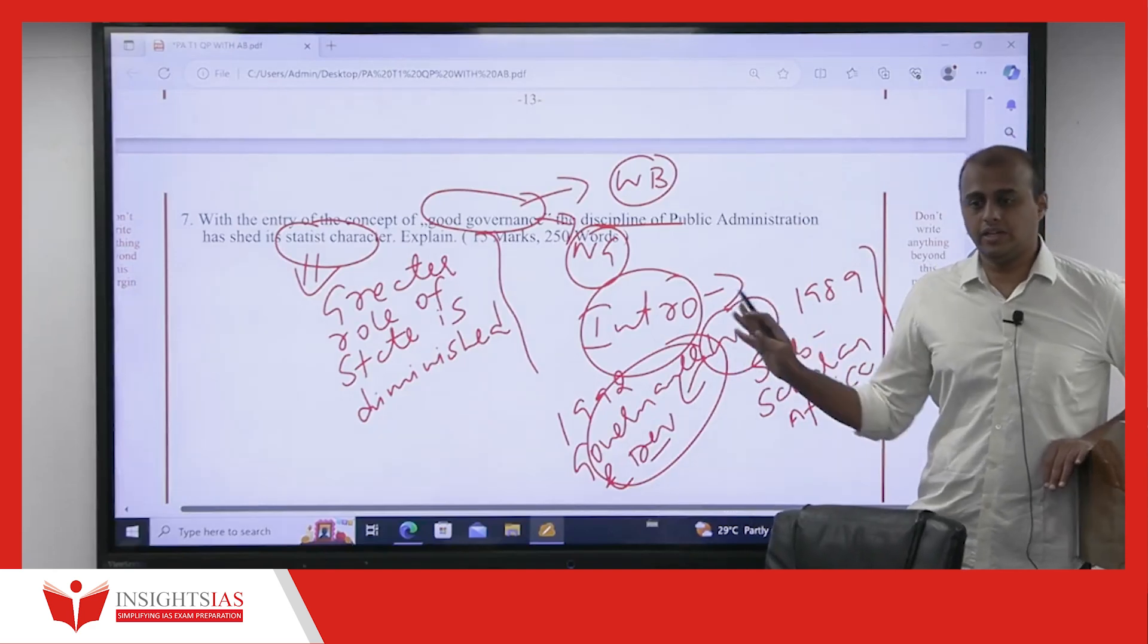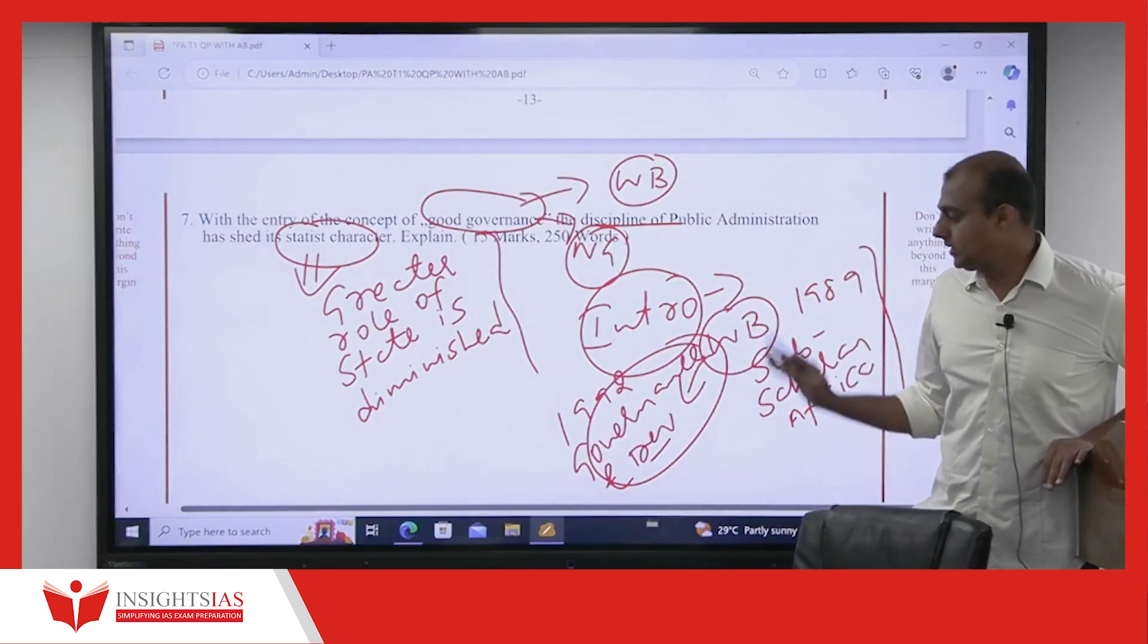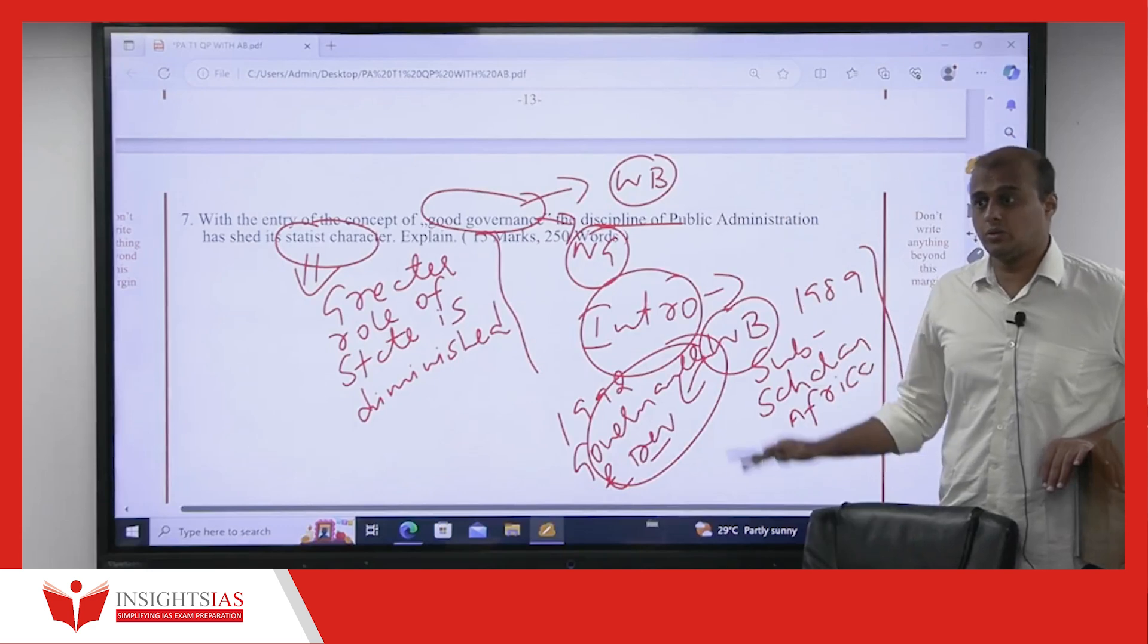And it was defined in which one? It was defined by World Bank in its 1992 report called Governance and Development. So, first given in 1989 report on Sub-Saharan Africa, but defined in 1992 report of Governance and Development. And what is the definition? Go back to the core. How is it defined?